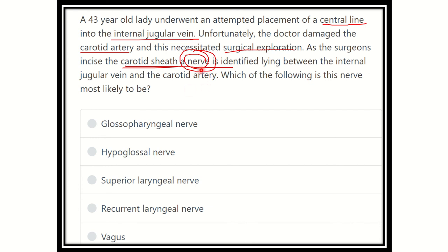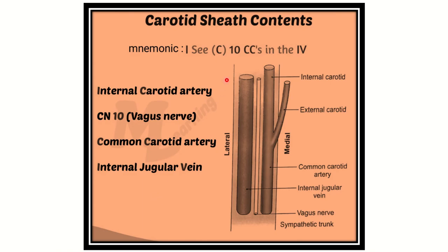This nerve is very important and it is located within the carotid sheath with the internal jugular vein and carotid artery. We have to find out the name of this nerve to answer the question. The options are: glossopharyngeal nerve, hypoglossal nerve, superior laryngeal nerve, recurrent laryngeal nerve, and vagus nerve.